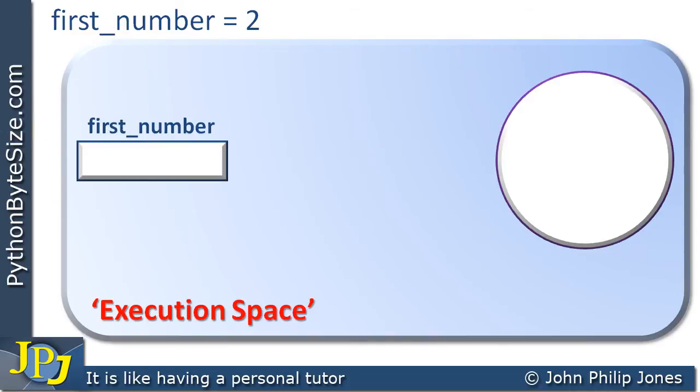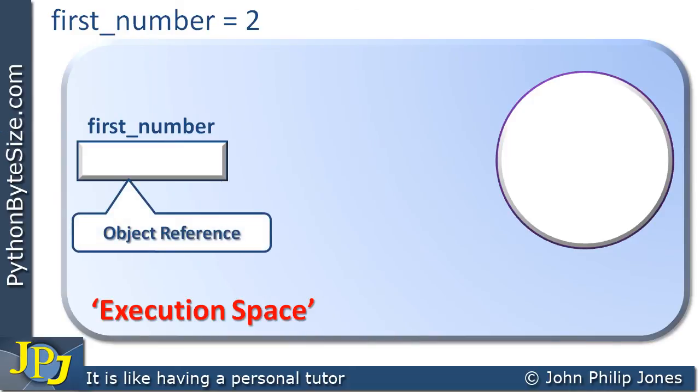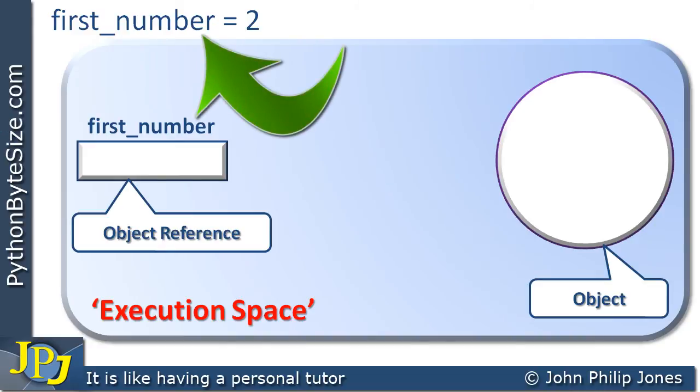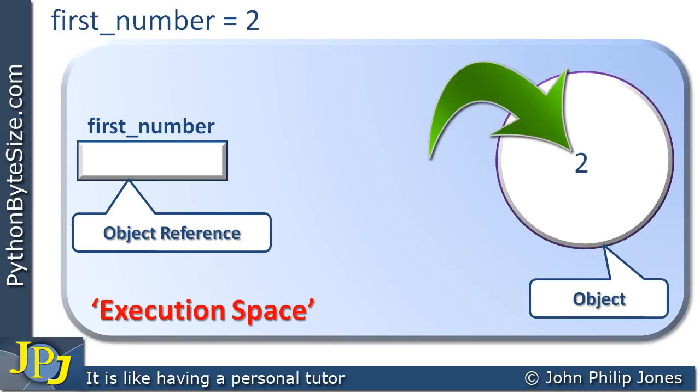Now the object reference is given the same name as the variable first number. So we can see that this is the object reference, and over here we have the object. So those are created by this first program statement, first number is assigned to, and the two is copied to the core of the object.